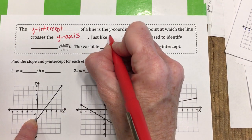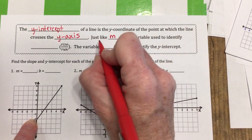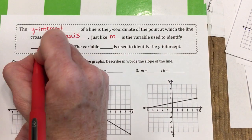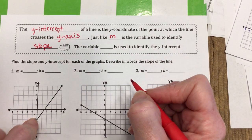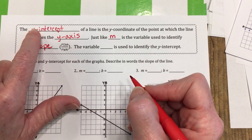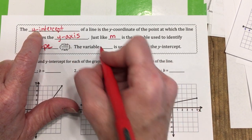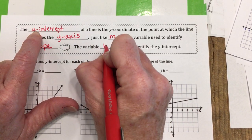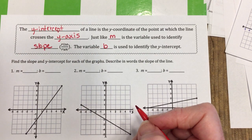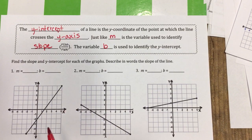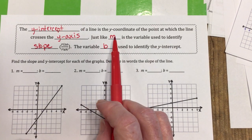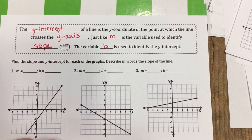Just like we use m to identify the slope as rise over run, there's a letter that represents the y-intercept, and that is the letter b. I don't know why m is slope and b is the y-intercept — it just is. You'll use both in a formula soon, so just know: m is the slope and b is the y-intercept.